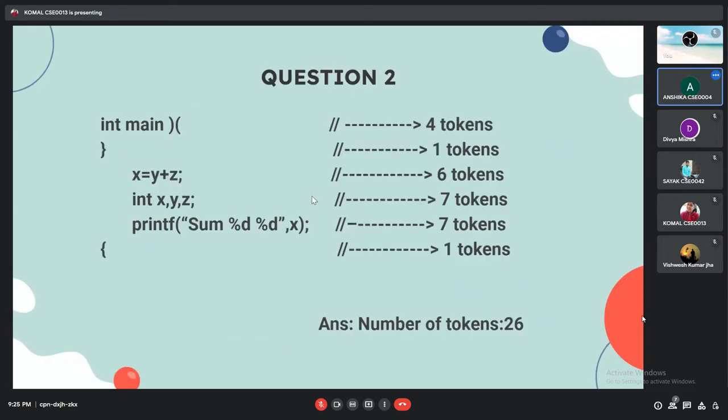Moving on to the next slide. Now let us understand with the help of an example. In this question we will count the number of tokens. We will not see whether the code is written correctly or not. First we will convert the code into token. The lexical analyzer works is to convert the stream of characters to stream of tokens. In the first line there are total number of four tokens. Int is number one token. Main is the second token. The third token is the opening bracket. And the fourth token is the closing bracket. In the next line there are only one token that is a closing curly brace.